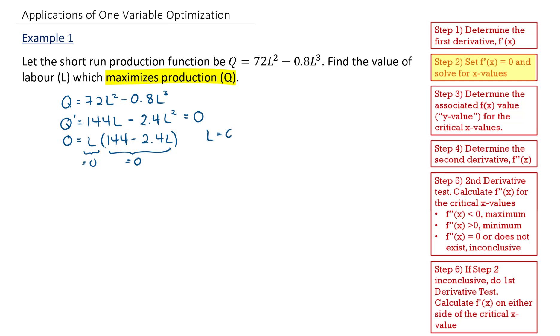One is when L is equal to 0, the first derivative will be 0. Or alternatively, when 144 minus 2.4L is equal to 0. This can be solved for by moving 2.4 to the other side of the equation. I get 144 is equal to 2.4L. Divide both sides by 2.4, and I get L is equal to 60. So I have a critical point when L is equal to 0 and when L is equal to 60.